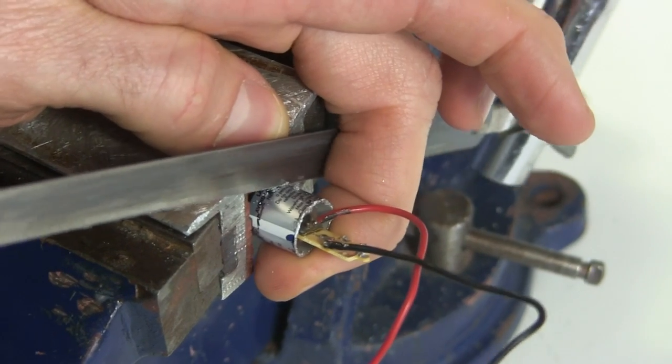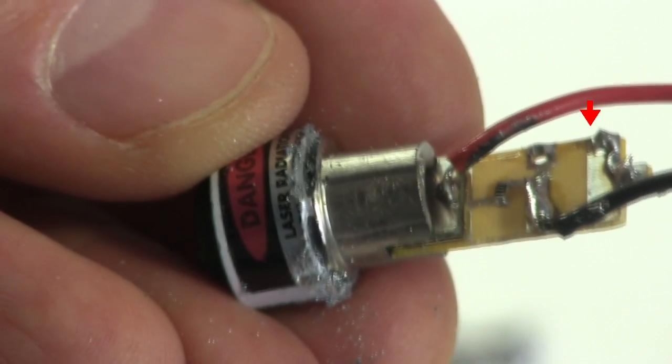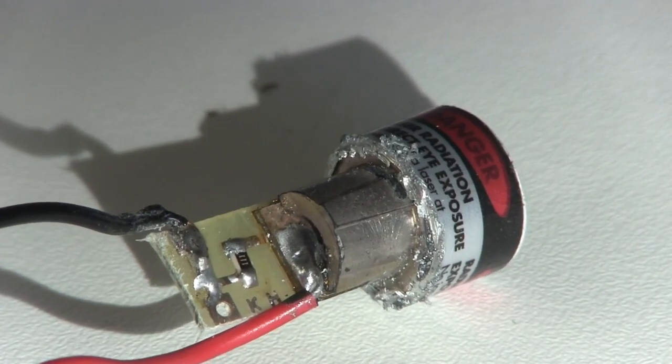But I can make it smaller. I cut back more of the cylinder until I have this. This part of the circuit board isn't needed anymore so I cut that off too. And now it's as small as I can make it.